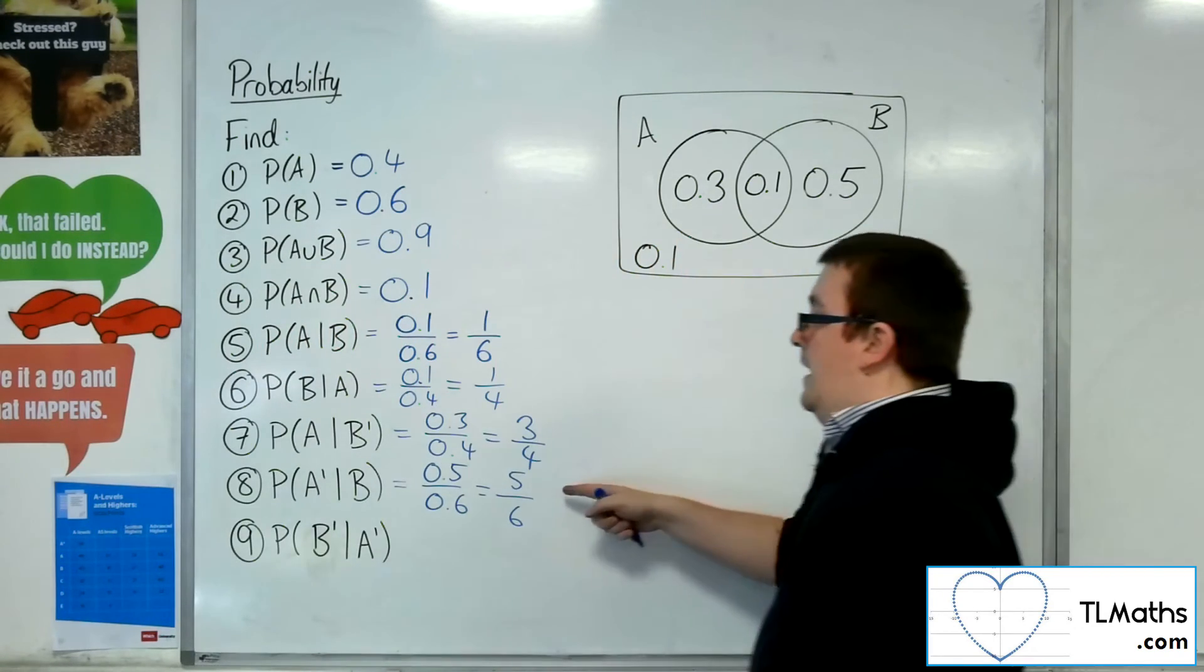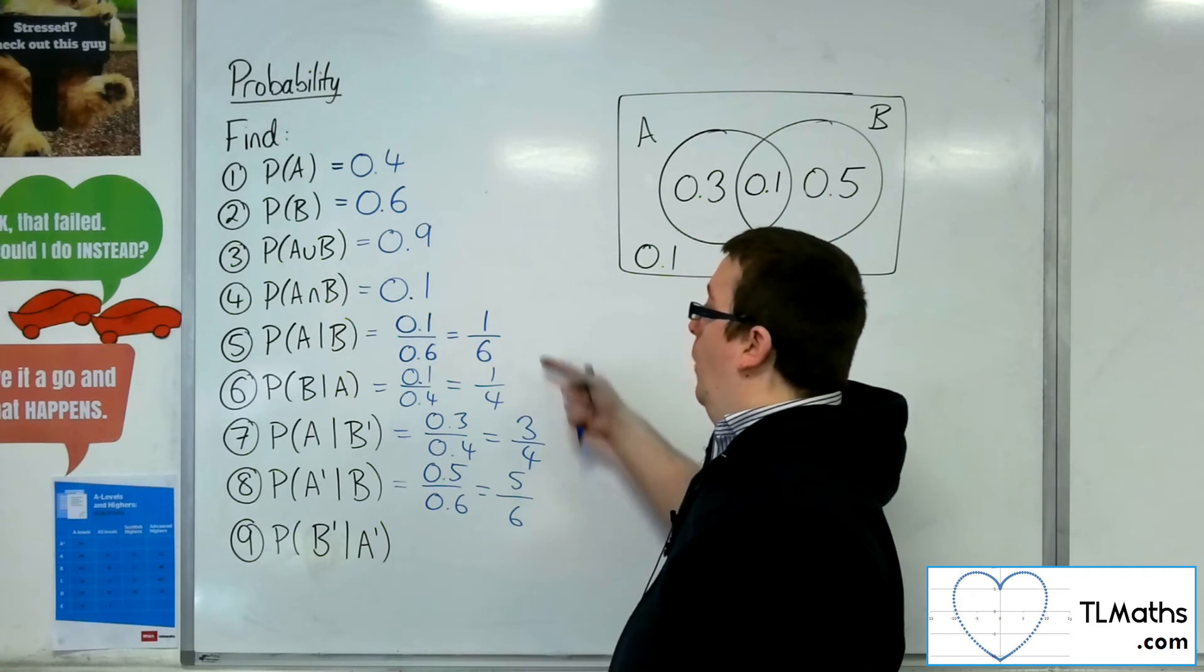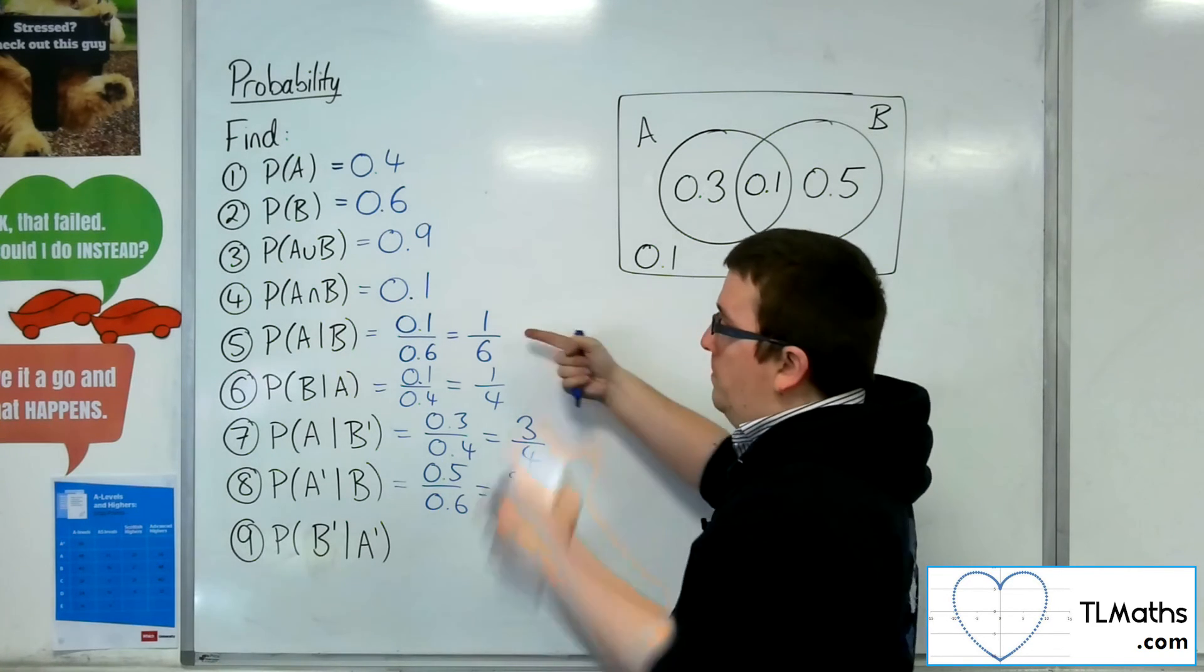Okay, so this is effectively, well, it's one takeaway, the probability of A given B, as we saw in part five.